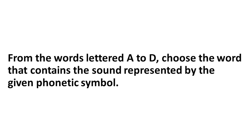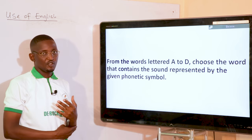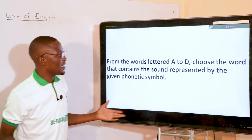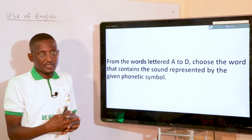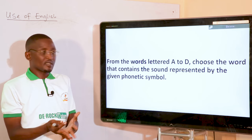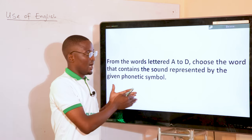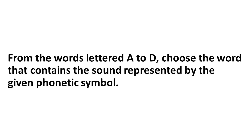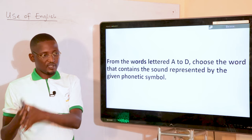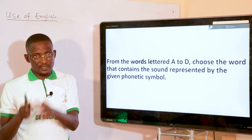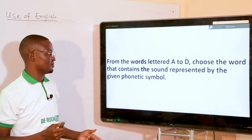From the words lettered A to D, choose a word that contains the sound represented by the given phonetic symbols. Phonetic symbols — whether consonant or vowel sounds — will be given, and you'll be asked to pick the option that actually contains that represented sound.